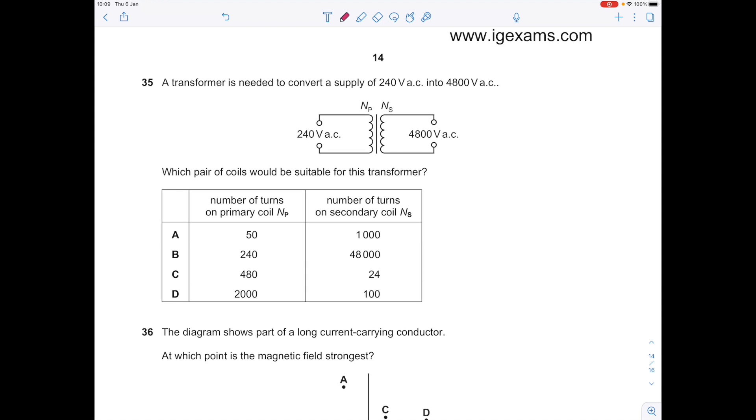A transformer is needed to convert a supply of 240 volts alternating current into 4800 volts alternating current. Which pair of coils would be suitable for this transformer? Our equation is voltage in the primary divided by voltage in the secondary equals number of turns primary over number of turns secondary.